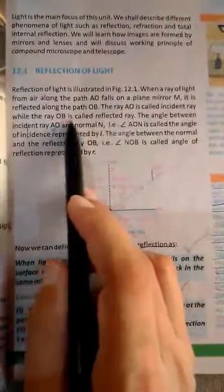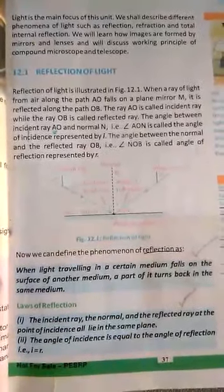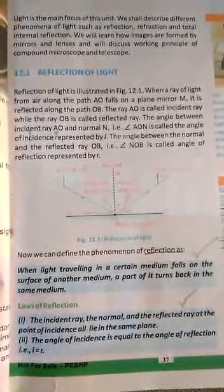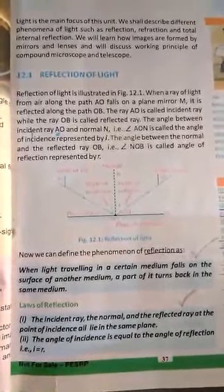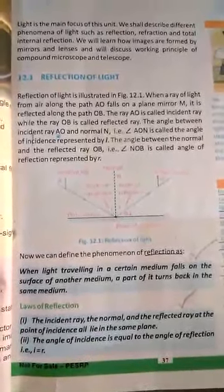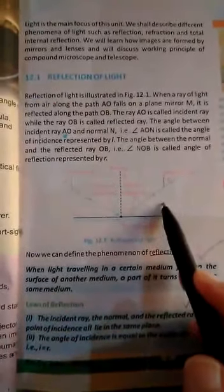The incident ray is the ray from where the whole process starts — it is the starting ray. The ray OB is called the reflected ray. The definition of reflection is: when light passing through a certain medium falls on a surface, a part of it is turned back into the same medium — that is the reflection of light.